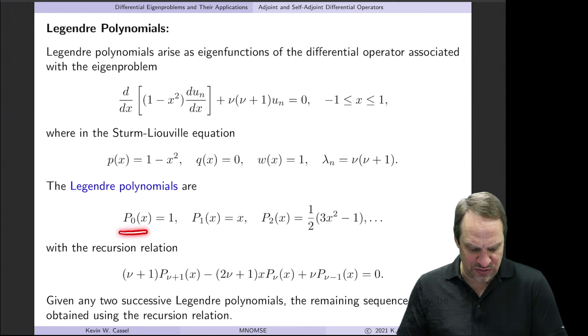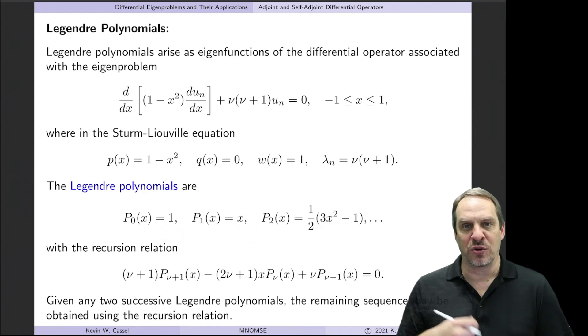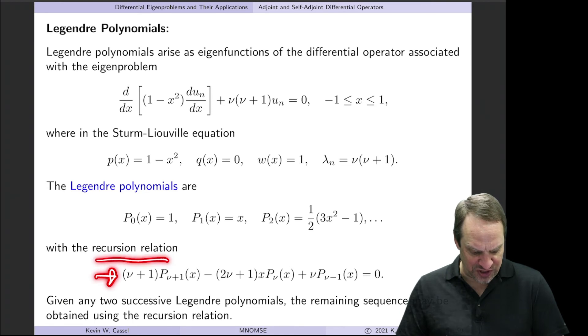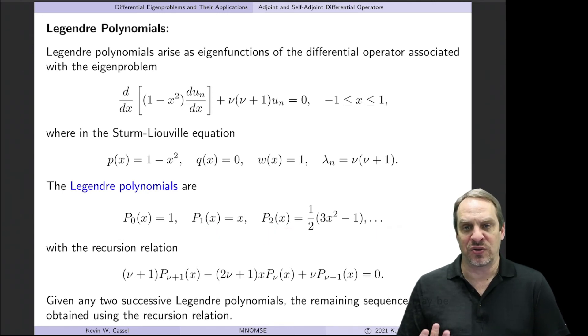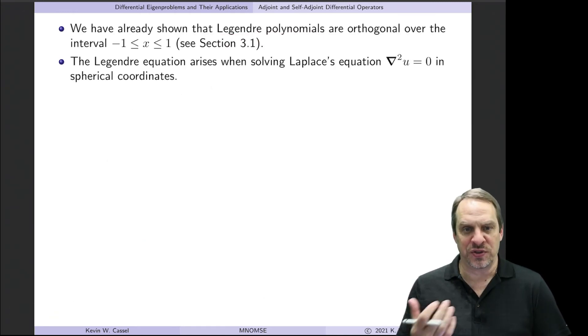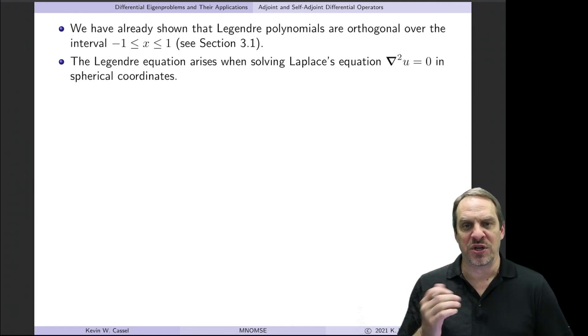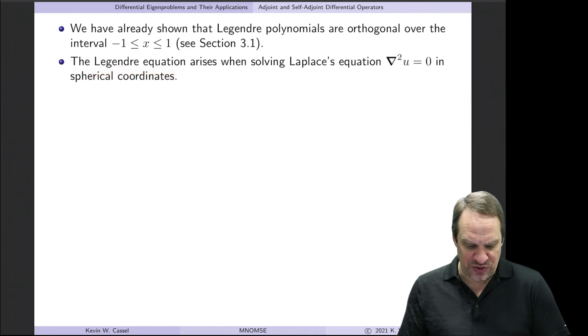you'll end up with capital P0 is equal to one, P1 is equal to x, P2 is a half times 3x squared minus one, and so forth. There's an infinity of these increasing orders. So this is x to the 0, x to the 1, and x squared order polynomials. And the way these are often expressed is through a recursion relation that relates three successive Legendre polynomials. So in other words, if you know what P0 is and P1, then you can get P2. If you know P1 and P2, you can get P3, and so forth. So you can encapsulate all of them simply through this recursion relation and knowing two of the corresponding eigenfunctions. Now we've actually already shown that Legendre polynomials are orthogonal over this interval from minus one to one. This was done early on. You maybe remember we used Gram-Schmidt orthogonalization to orthonormalize a set of polynomials, and we end up getting these Legendre polynomials. The Legendre equation often arises when you're solving Laplace's equation, so del squared u is equal to zero in spherical coordinates.